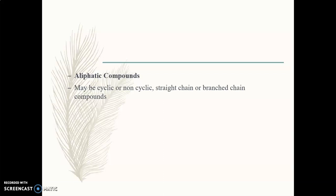Aliphatic compounds may be cyclic or non-cyclic. If they are non-cyclic, they may be straight chain or branched chain compounds. We have studied only non-cyclic aliphatic compounds and have not studied the cyclic aliphatic compounds. The example of a cyclic aliphatic compound includes cyclohexane. Examples of non-cyclic aliphatic compounds include methane and ethanol.